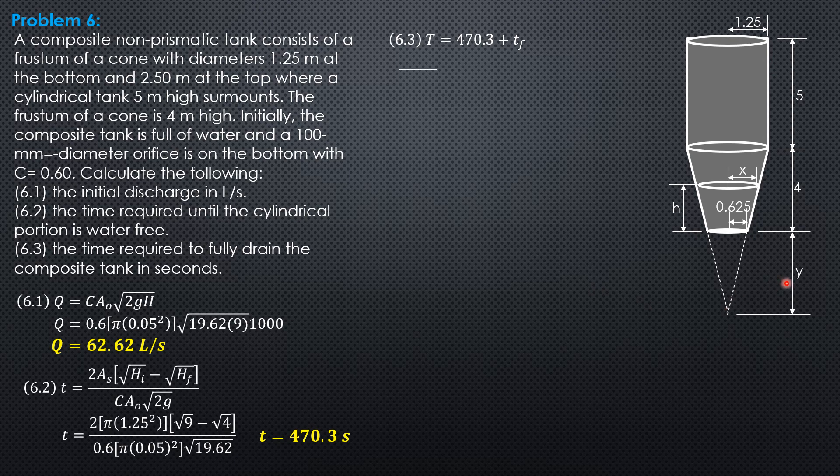So let's solve for y first. So y/0.625 = (y+4)/1.25. So y is also 4 meters. Then formula, x/(h+4) = 0.625/4. So x = (25/32)(h+4).